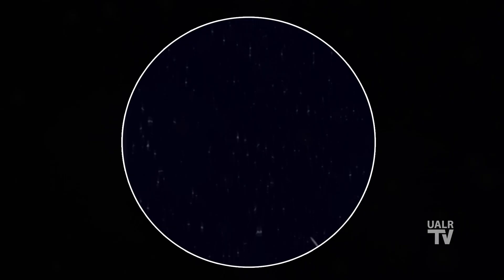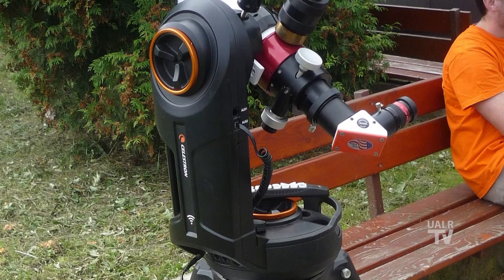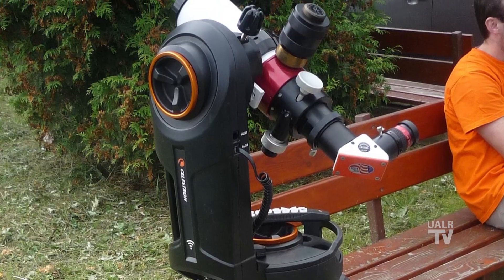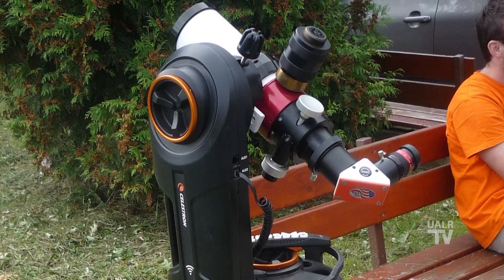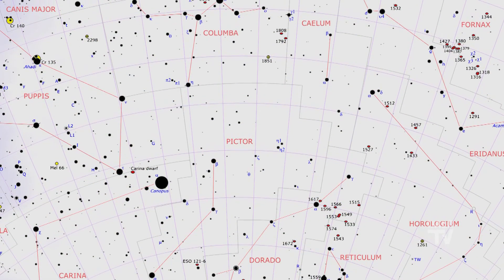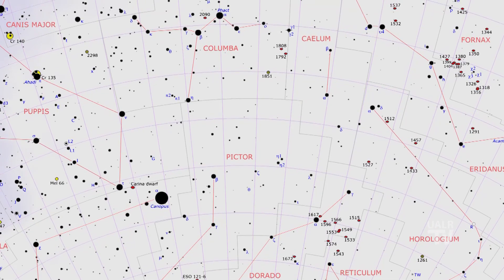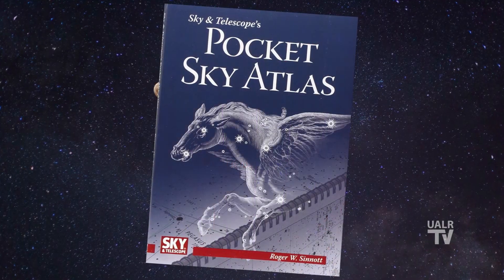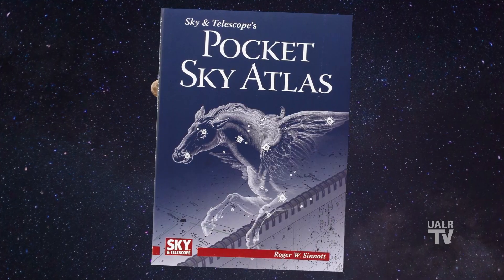But finding others might be more challenging, especially if you don't have a computerized go-to telescope that will simply guide you to an object with the push of a button. This is where having a good star atlas and knowing how to use it will come in handy. I recommend Sky Telescope's Pocket Sky Atlas. Alternatively, and with much more enthusiasm, I would strongly urge you to learn how to find objects by star hopping. This is pretty much what it sounds like.